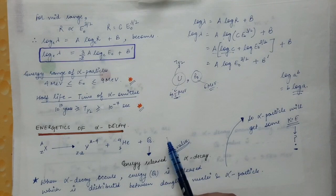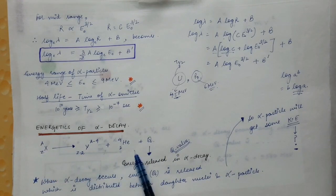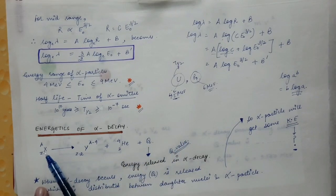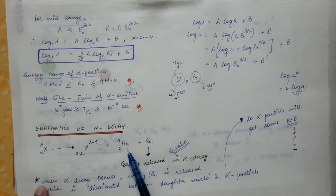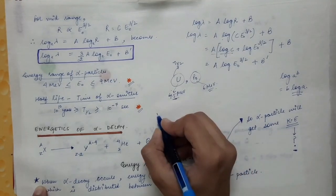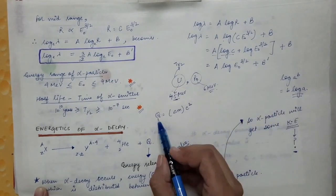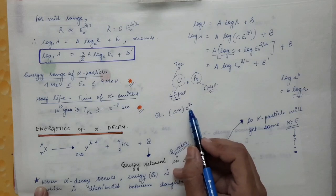The reason energy is released is the difference in mass between the parent and the products. The mass of the parent nucleus must be greater than the sum of the masses of the daughter nucleus and the alpha particle. This energy can be found using Einstein's mass-energy equivalence relation: E = mc². So Q = ΔM × c².